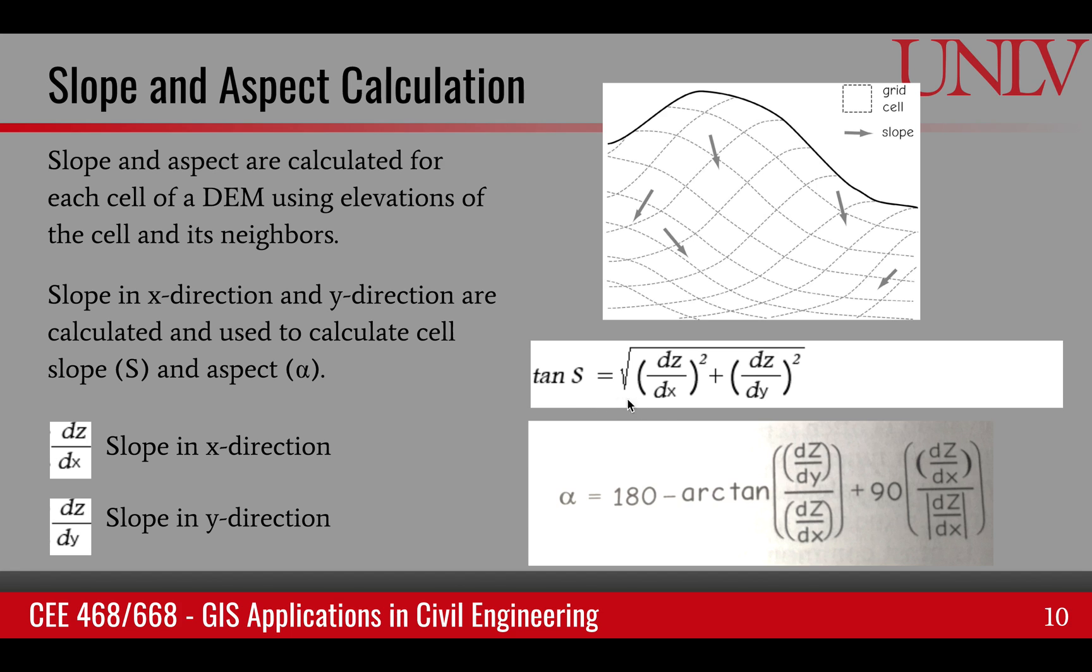Tangent of slope is the square root of the sum of the squares of these two slopes in the x and y direction. And alpha is basically just arc tangent of the ratio.